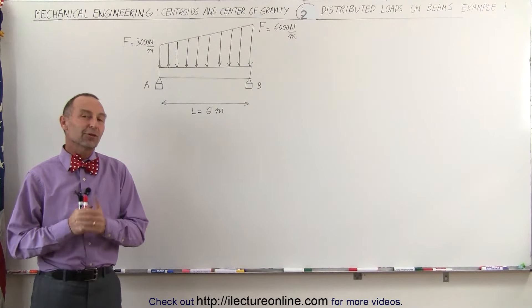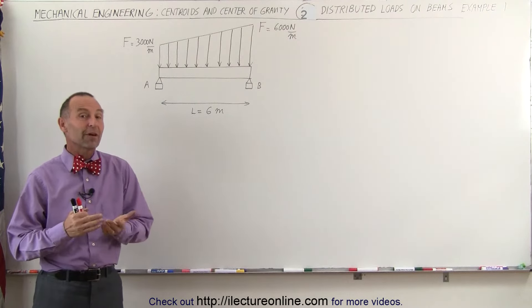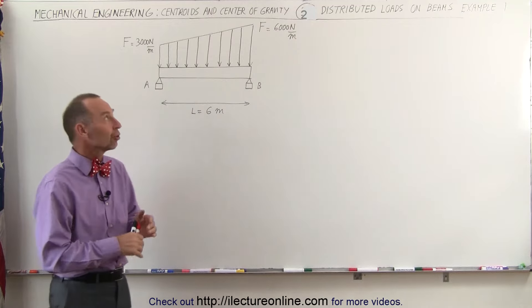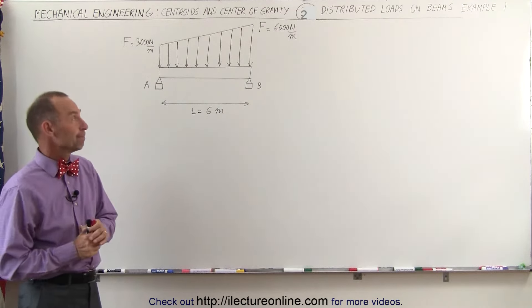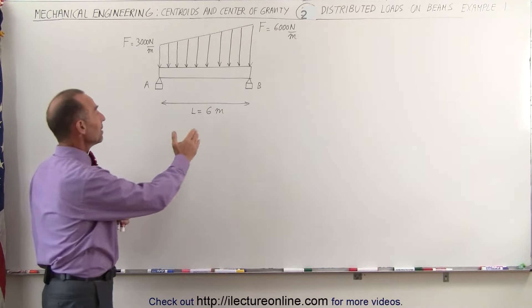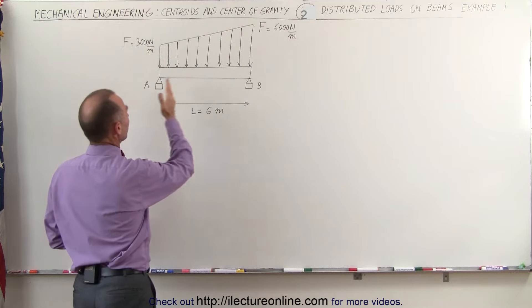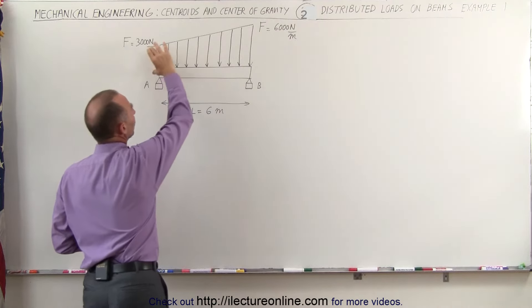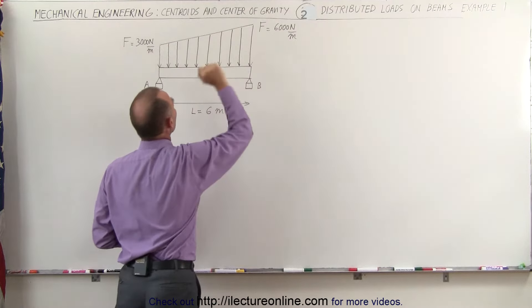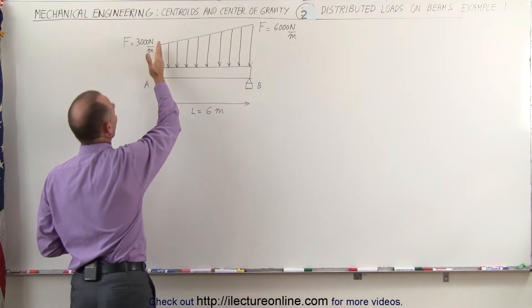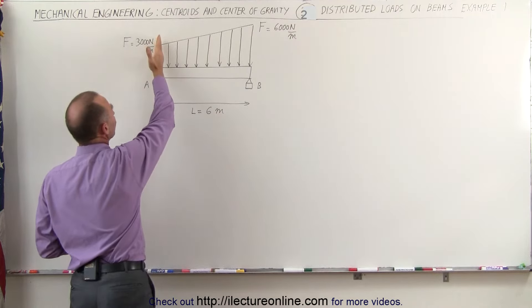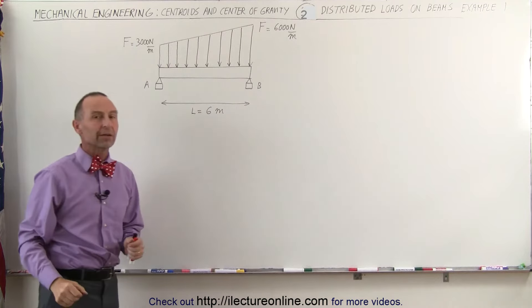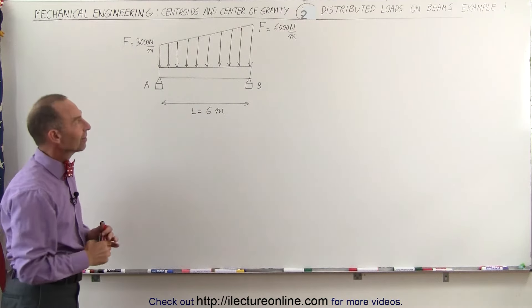Welcome to Electronline. Here's our first example of how to calculate the reactionary forces caused by a distributed load on a beam. We have a beam which is 6 meters long, supported at point A and at point B. We have a distributed load that starts with a force of 3,000 N per meter on the left side and increases to 6,000 N per meter on the right side.